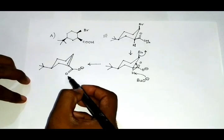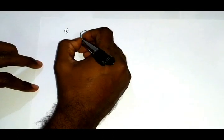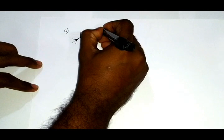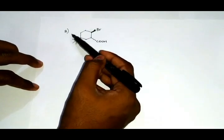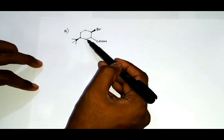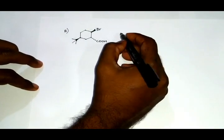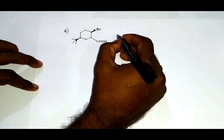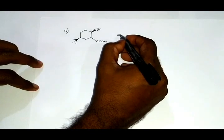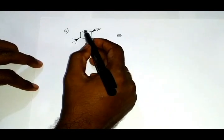This leads to the formation of the product. The key thing to note is that the carboxylic group is still present in the product of reaction A.